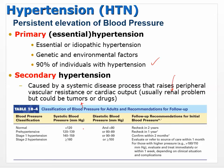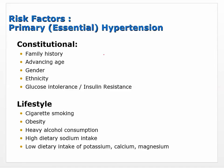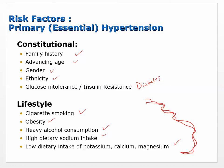Normal blood pressure is usually 120 over 80. Risk factors include constitutional ones you can't do much about — family history, age, gender, ethnicity, diabetes — and lifestyle factors you can control: cigarette smoking, obesity, heavy alcohol consumption, high sodium intake (which can cause increased fluid volume), and low dietary intake of potassium, calcium, and magnesium. These lifestyle factors are often part of the treatment of hypertension.